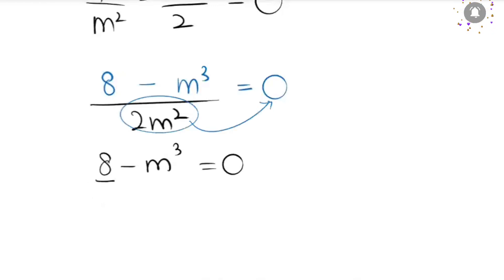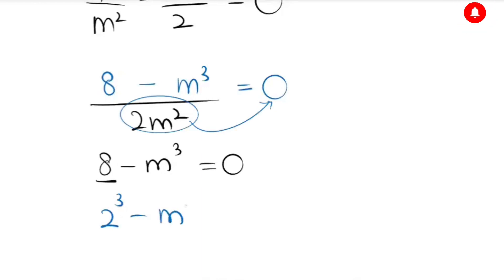Now I am going to rewrite this as 2 to the power of 3 minus m to the power of 3 is equal to 0.